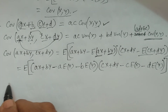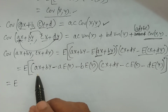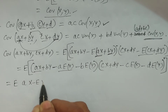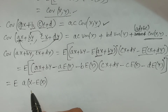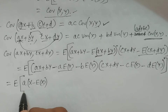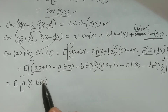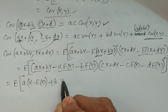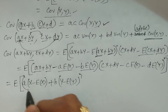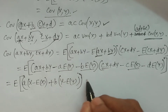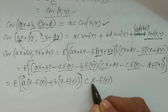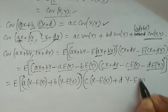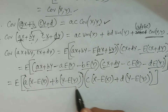Regrouping, the first factor becomes a·(x minus E(x)) plus b·(y minus E(y)), and the second factor becomes c·(x minus E(x)) plus d·(y minus E(y)). These are the two terms to multiply together inside the expectation.